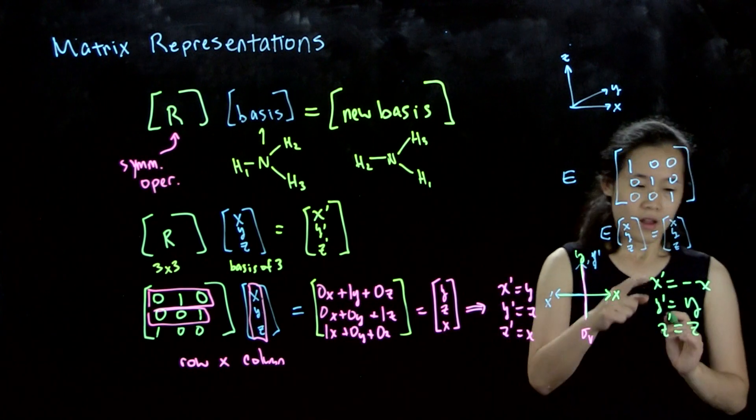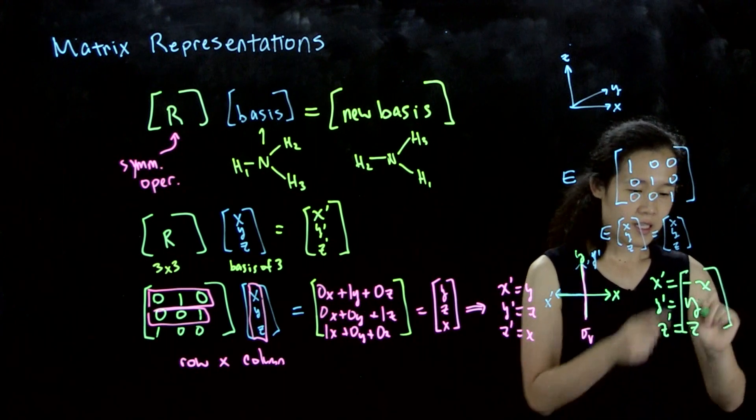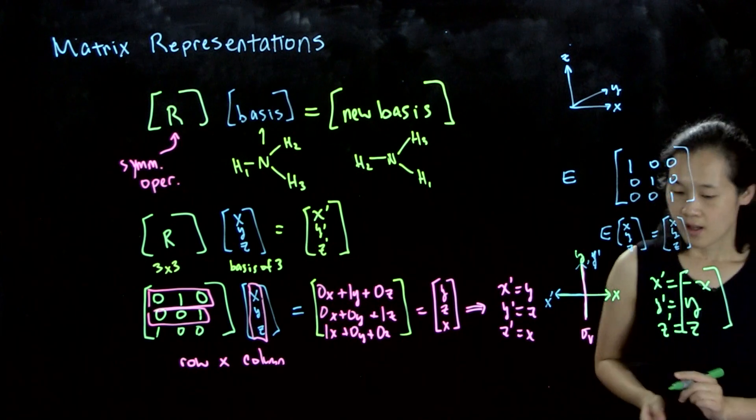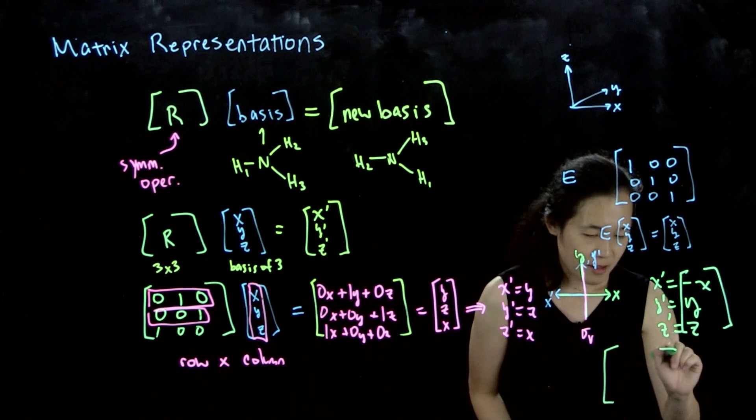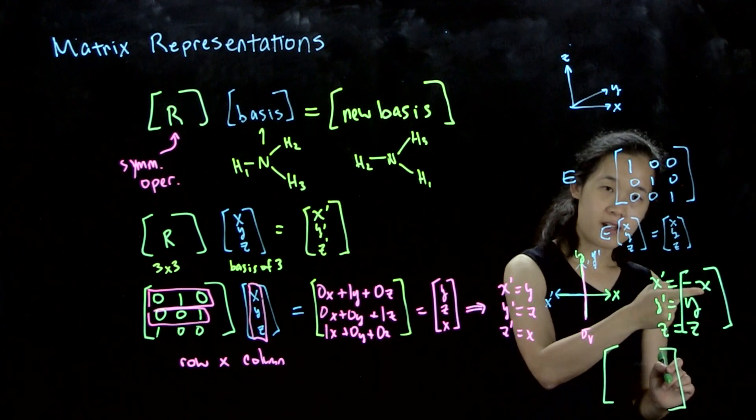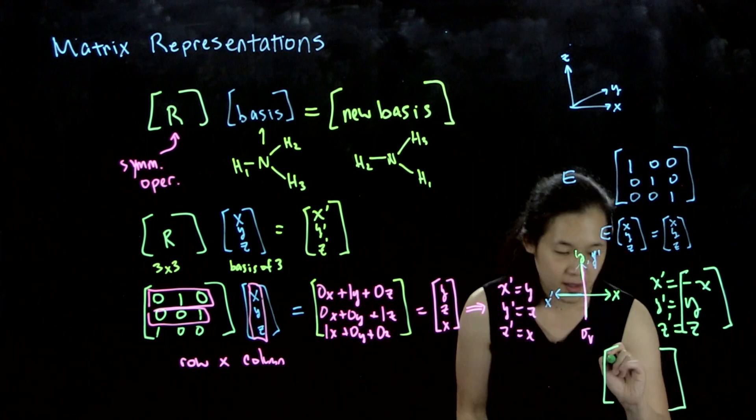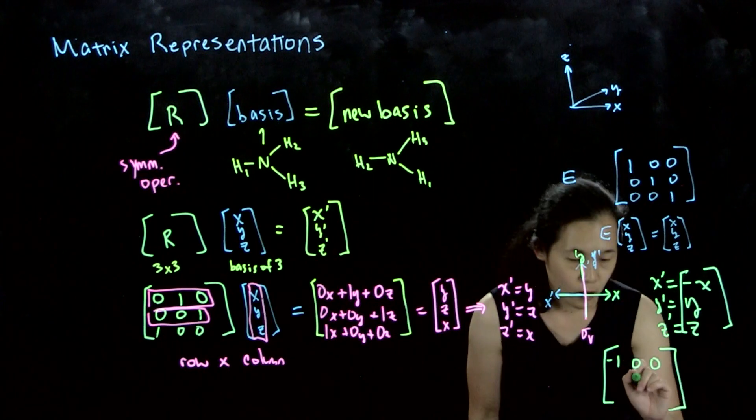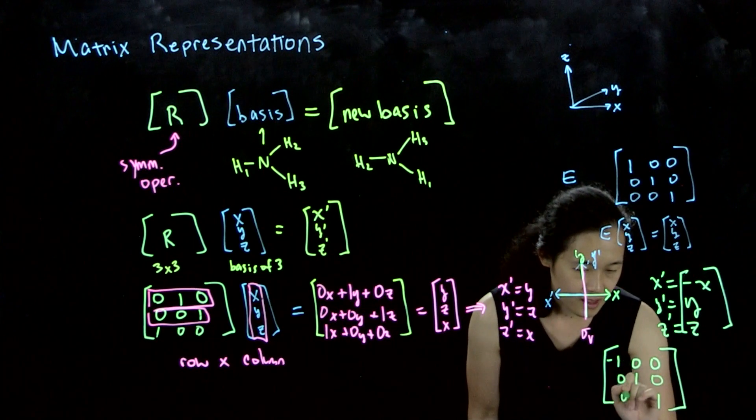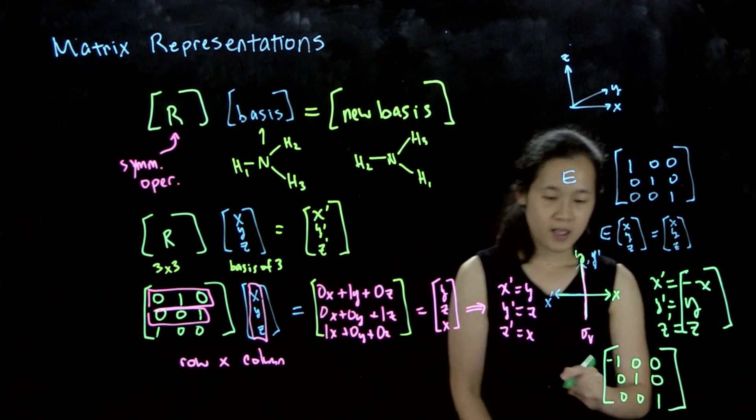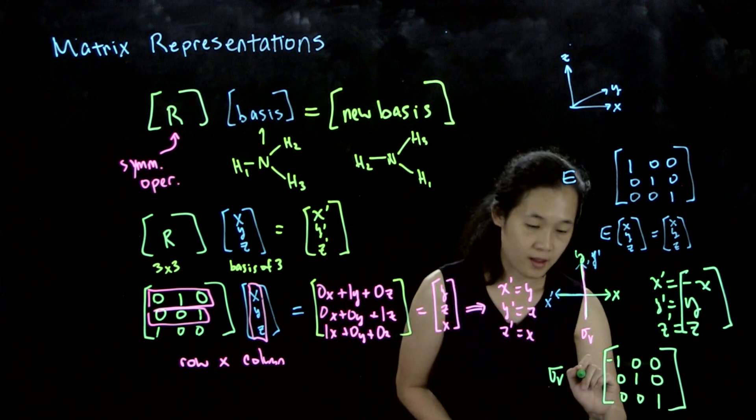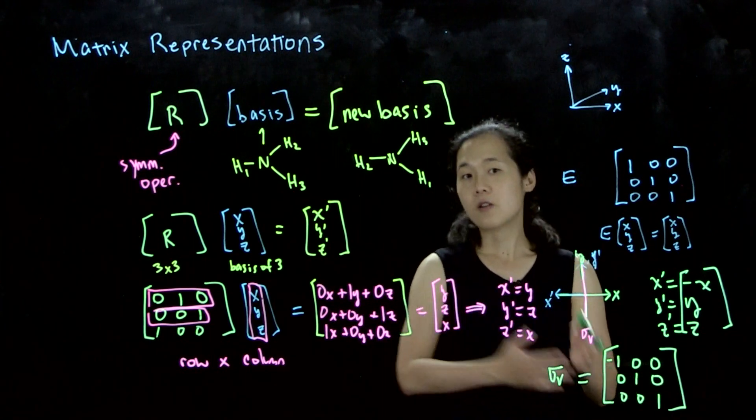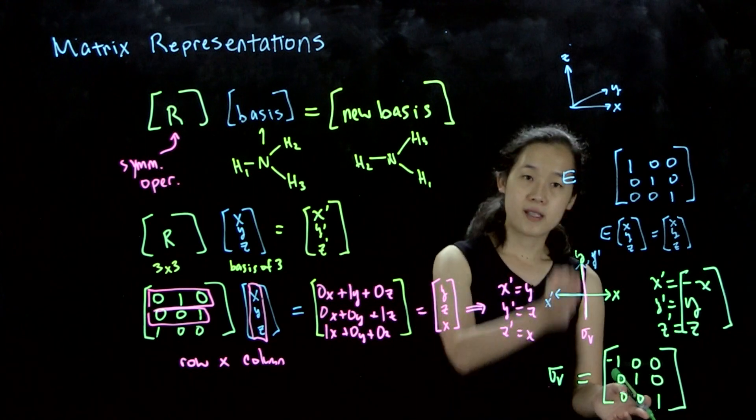This has to be our final vector: negative x, y, and z. To find the matrix that transforms x, y, z into this, it's relatively straightforward. If you know how matrix multiplication works, to have this first element be negative x, our first row has to be [-1 0 0], and for y and z to be the same, the diagonal has to be 1's. So it's [0 1 0; 0 0 1]. This is our sigma_v matrix for this particular operation, and we can use this to transform any coordinate in space once sigma_v has been defined.